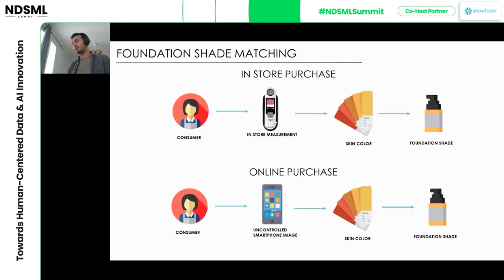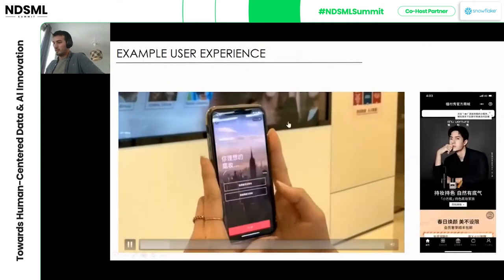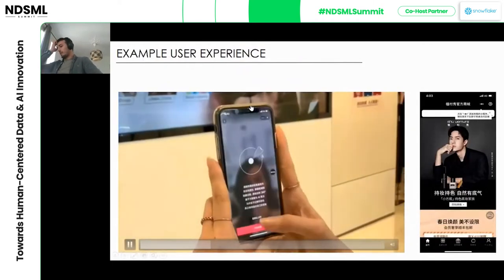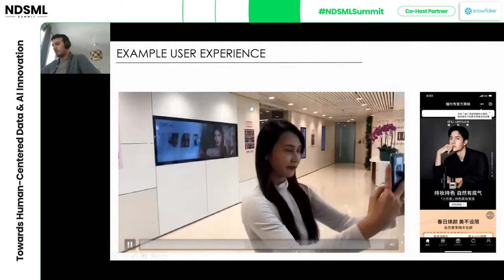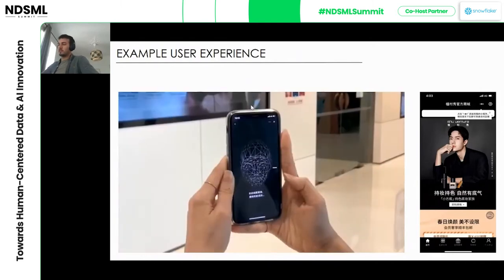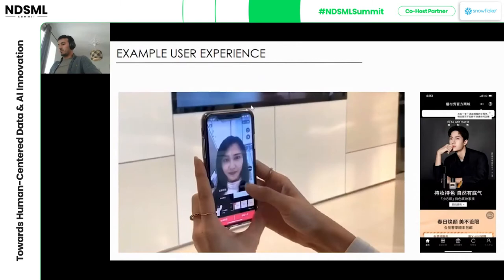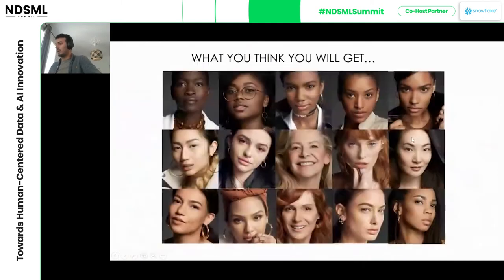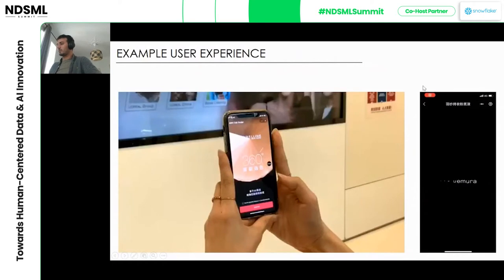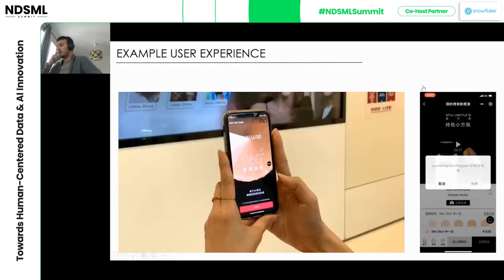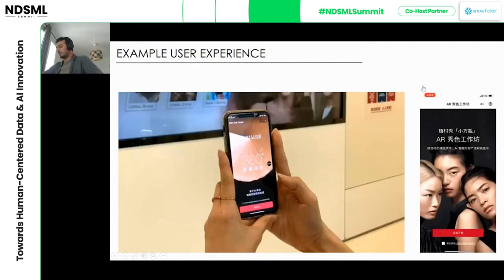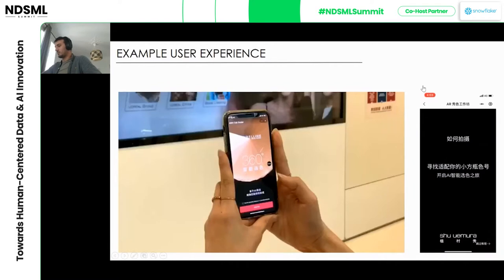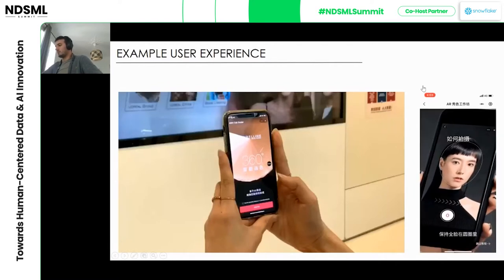We want to set up a pipeline to help the consumer buy a foundation product even if they've never tested it in a physical store. Here is an example of this experience deployed for several brands in China. The consumer sends an image — in this case it's a video but it could be a still image — and out of that we recommend a set of shades. You can see the shades overlaid to confirm they match the skin tone. The same user experience is shown on different brands: you get a consumer image, make a skin diagnostic, and derive the set of shades most adapted to that particular person.